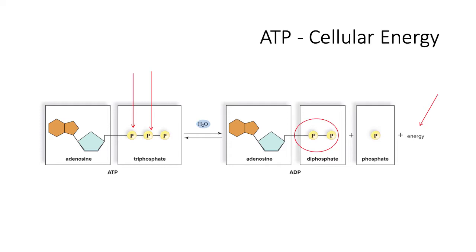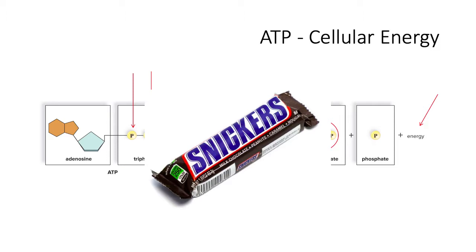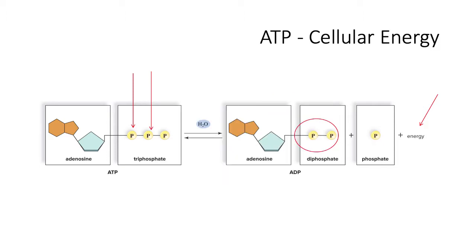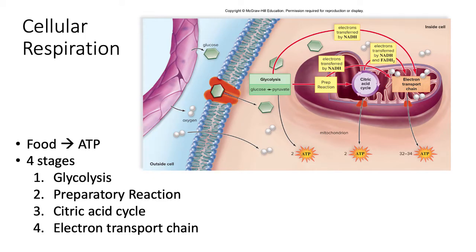When you eat a candy bar, you are not able to immediately use that candy bar for energy. We must catabolize the macromolecules, such as fat and carbohydrates, and harvest their energy to make ATP. This is what the cell uses for energy. But how do we do this? The process of cellular respiration catabolizes the food we eat and transforms it into usable energy, or ATP.